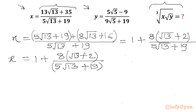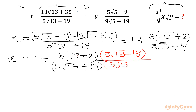Now I will rationalize our denominator. I need to multiply numerator and denominator by the denominator's conjugate, which is 5√13 minus 19. So multiply by (5√13 − 19) in both numerator and denominator.